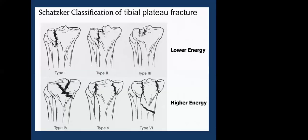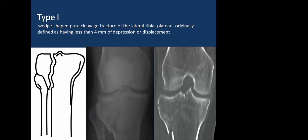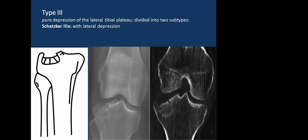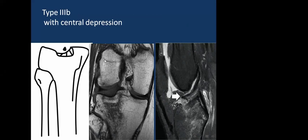The Schatzker classification of tibial plateau fractures: Type 1 is a pure cleavage fracture of the lateral tibial plateau with less than 4 mm of depression or displacement. Type 2 is similar to type 1 but with a depressed fragment — CT may reveal depression not apparent on X-ray. Type 3 is pure depression of the lateral tibial plateau, divided into type 3A with lateral depression and type 3B with central depression.